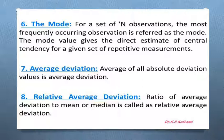So what is mode? For a set of observations having n number of observations, the most frequently occurring observation is referred to as mode. From this definition, what we can say is that in your data suppose there are n observations — say 20 observations — among those 20, suppose a value is repeated 12 times. So that value is called mode. The mode gives a direct estimate of the central tendency for the given set of repetitive measurements.